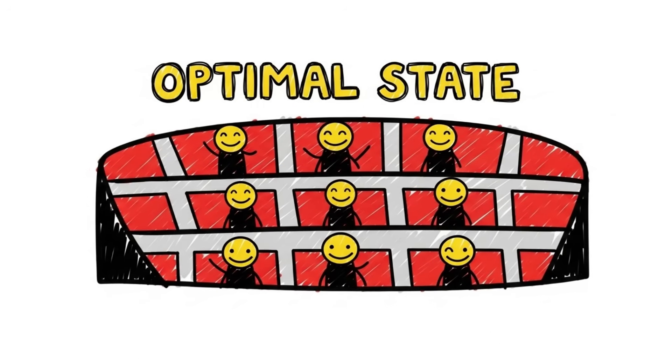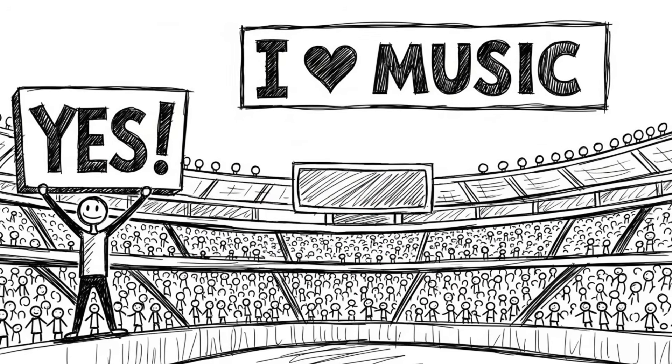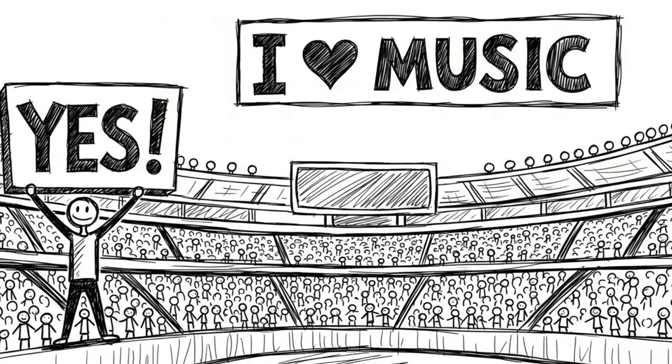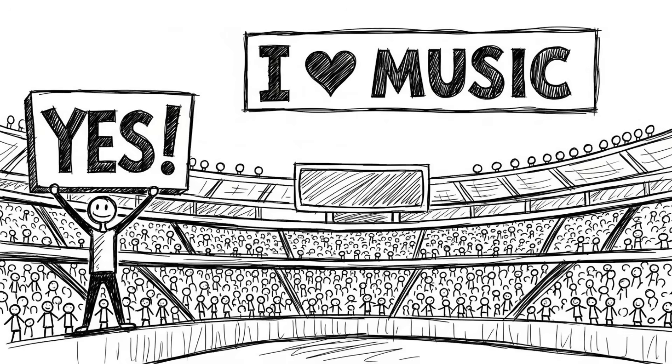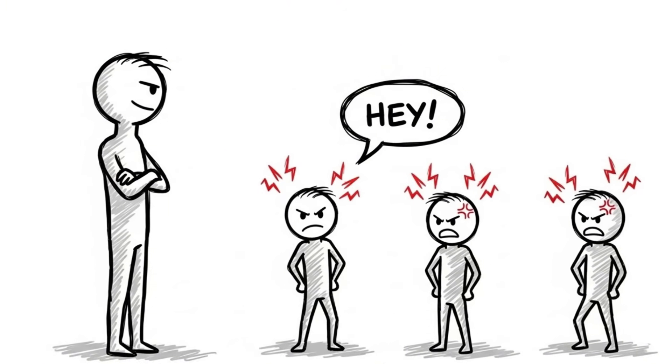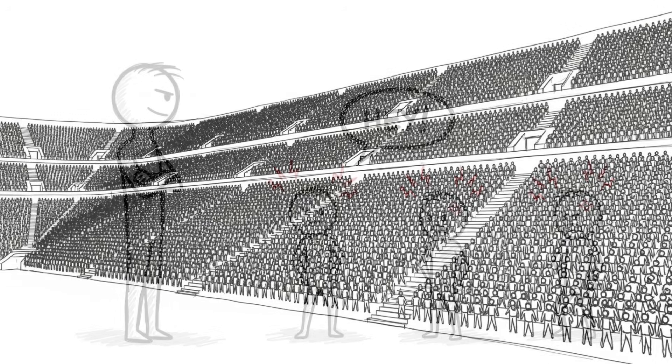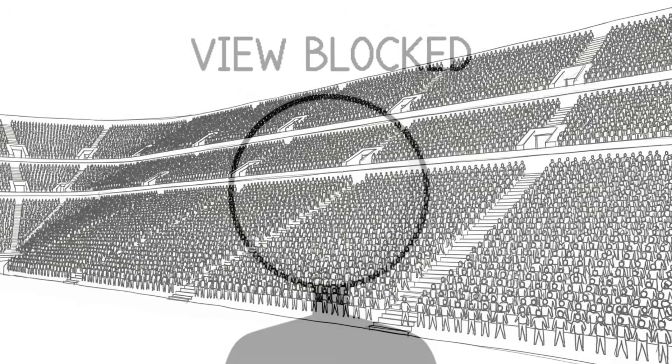Think about standing at a concert. At first, everyone is sitting comfortably. Then, one enthusiastic fan in the front row stands up to get a better view. Now, the people behind him can't see, so they stand up. This ripple effect moves all the way to the back of the stadium. Eventually, everyone is standing. The view is exactly the same as when everyone was sitting, but now your legs are tired, and you can't sit down because you'll see nothing. You are trapped in a Nash Equilibrium.